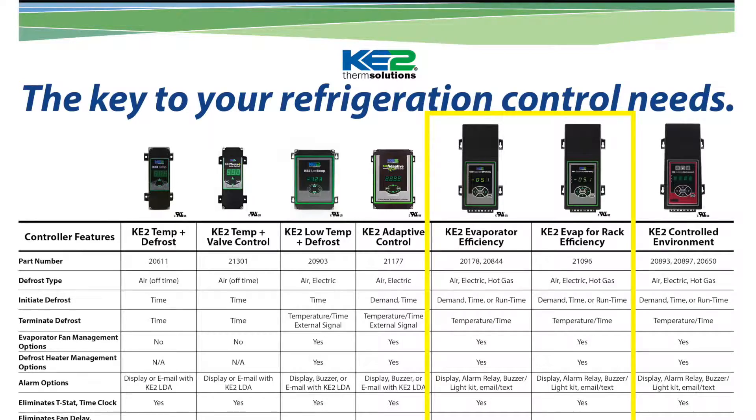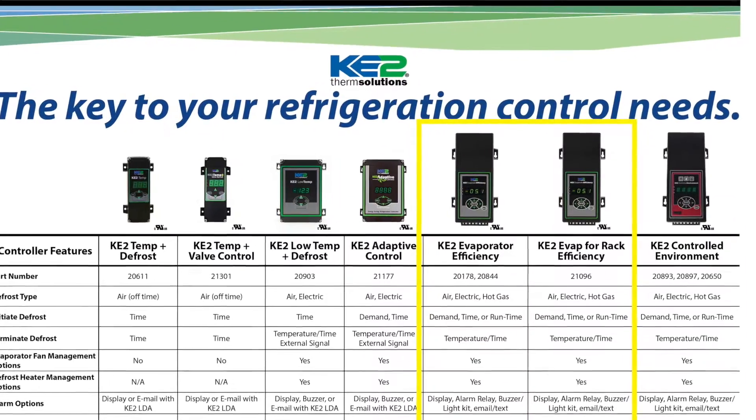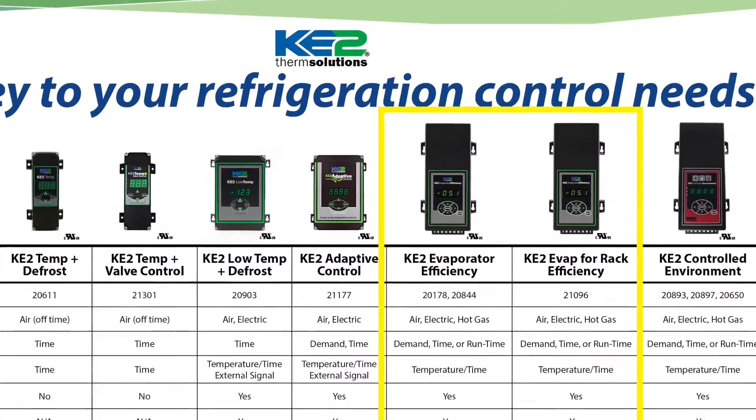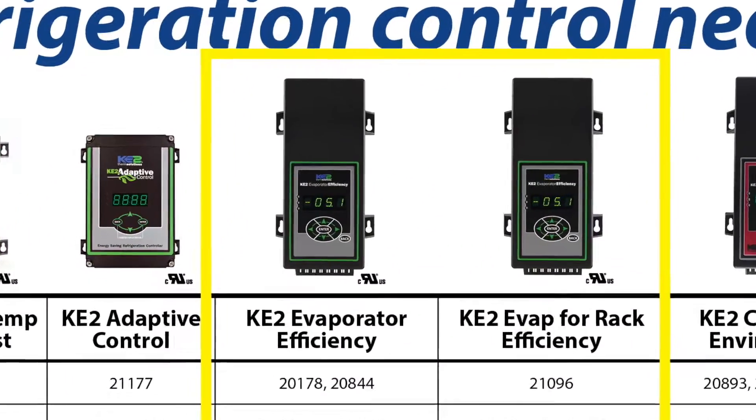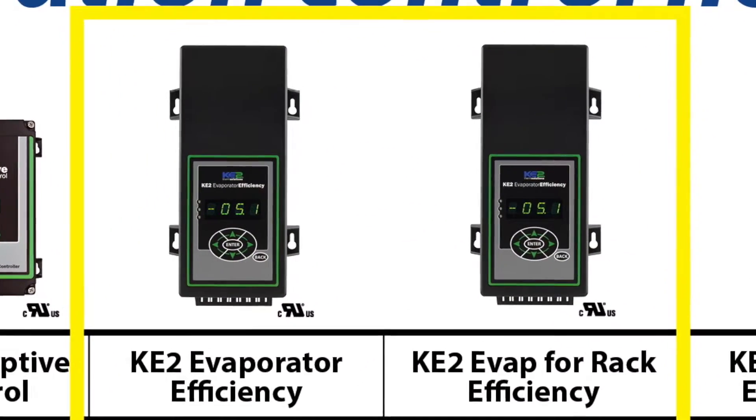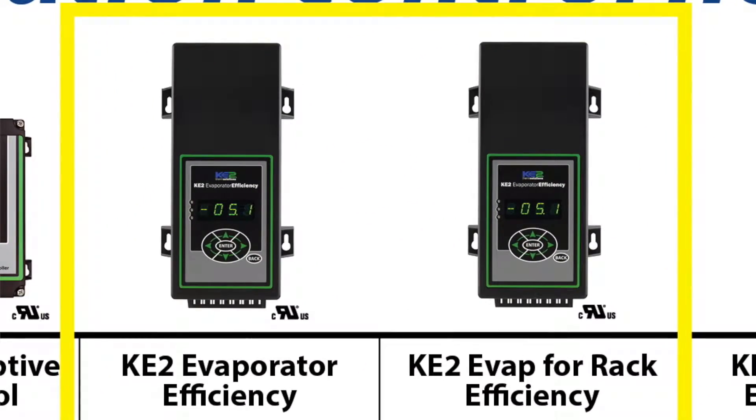One of the additions to our product line is the Keti Evap for rack efficiency. We are frequently asked about the differences between our flagship Keti Evaporator efficiency — the Keti Evap for short — and the Keti Evap for rack efficiency, or the Keti Evap RE.